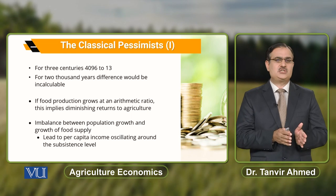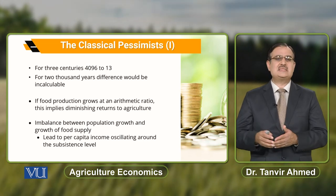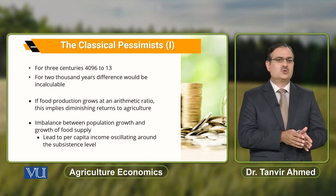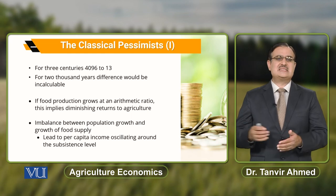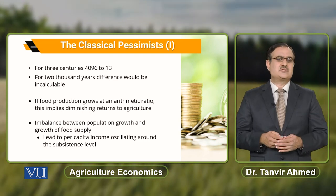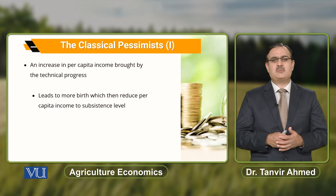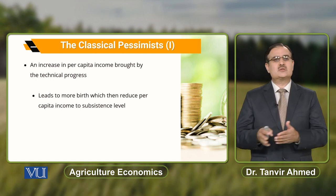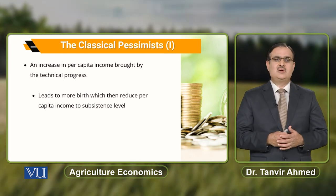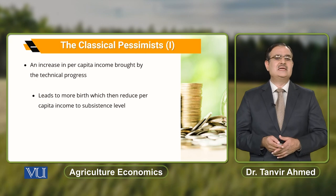Food production grows at an arithmetic ratio, which implies diminishing returns to agriculture. This imbalance between population growth and growth of food supply results in per capita income falling very close to the subsistence level. It might be possible that technical progress increases per capita output, but because of that technical progress, it also results in more births, which again reduces per capita income and keeps it near the subsistence level.